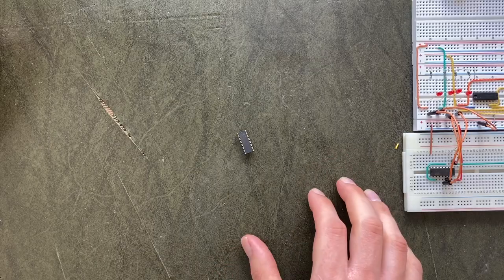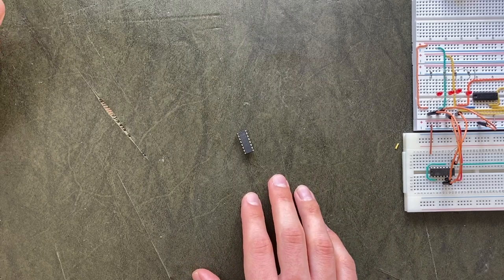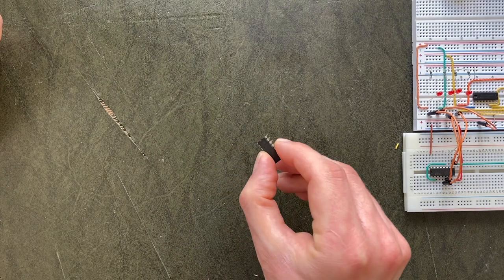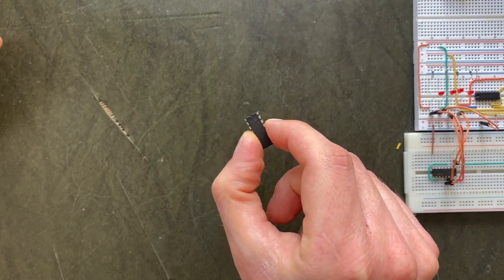If that's not exciting enough for you, here's another chip that we can use as a data source. It's called the 4015, a dual 4-bit shift register.